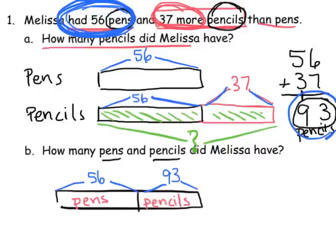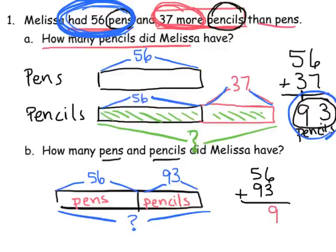And now, we're supposed to find the total, which is this whole thing right here. So, we're going to add 56 plus 93. And let's add. So, 6 plus 3 is 9. And 5 tens plus 9 tens is 14 tens. So, that's 149 total.